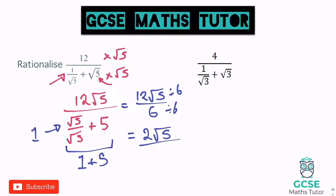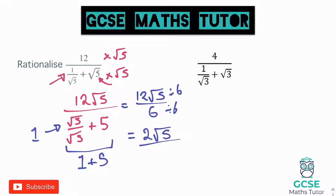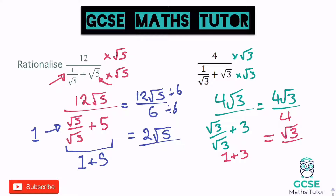There's one question on the right to have a go at — pause the video and have a go. Times the top and bottom by root three. On the top we get four root three. On the bottom, the fraction times root three gives root three over root three, which is one, plus root three times root three which is three — so the bottom is one plus three, which is four. Four root three over four: dividing top and bottom by four gives root three. So the answer is just root three. That's the end of the video — we'll look at some slightly harder rationalising in the next video. Please like, comment, and subscribe.